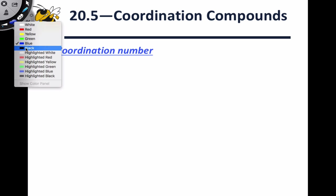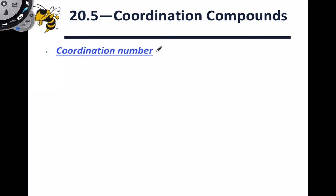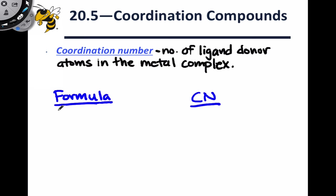One important characteristic of coordination compounds that plays a big role in their properties is the coordination number. We define the coordination number very specifically as the number of ligand donor atoms in the metal complex. So for example, the complex silver NH3 2 with a plus one charge has two ammonia ligands bonded to a central silver cation for a coordination number of two.